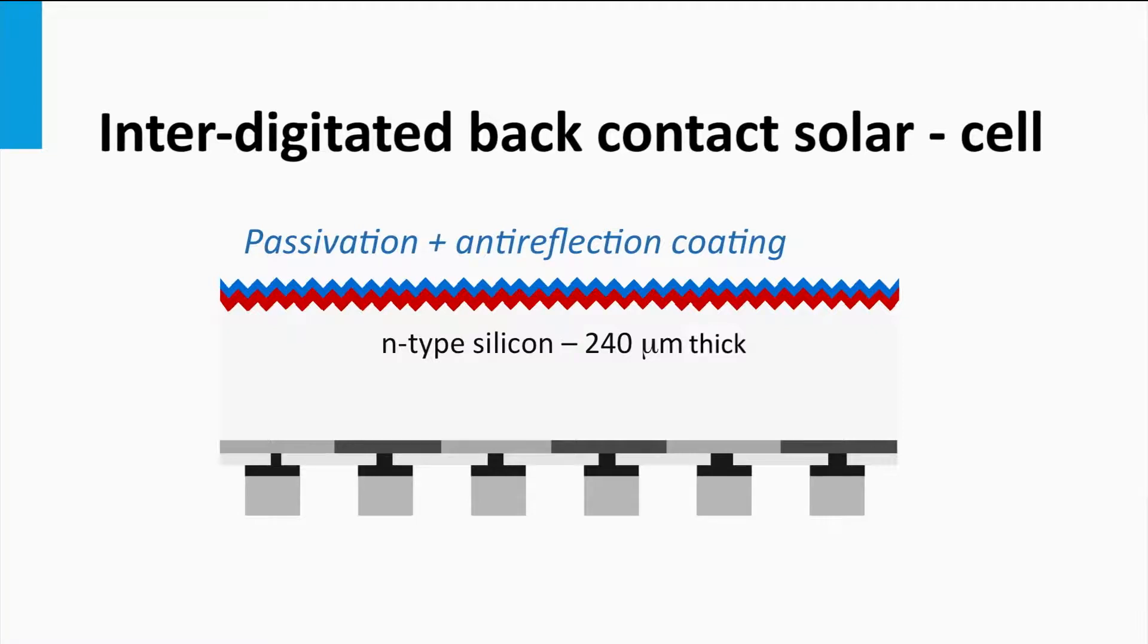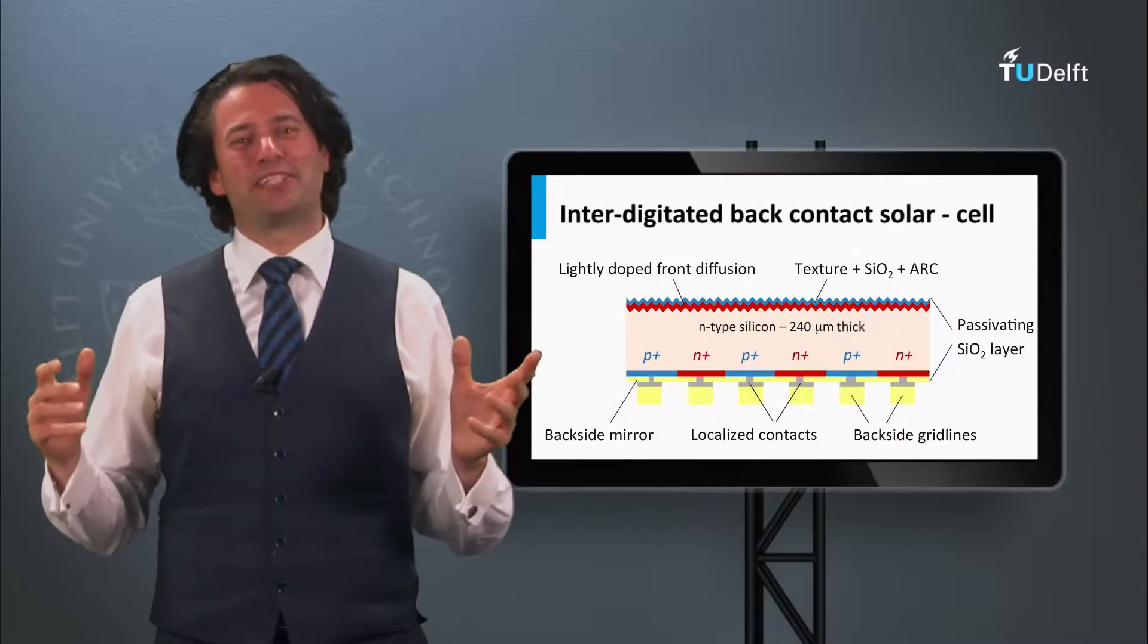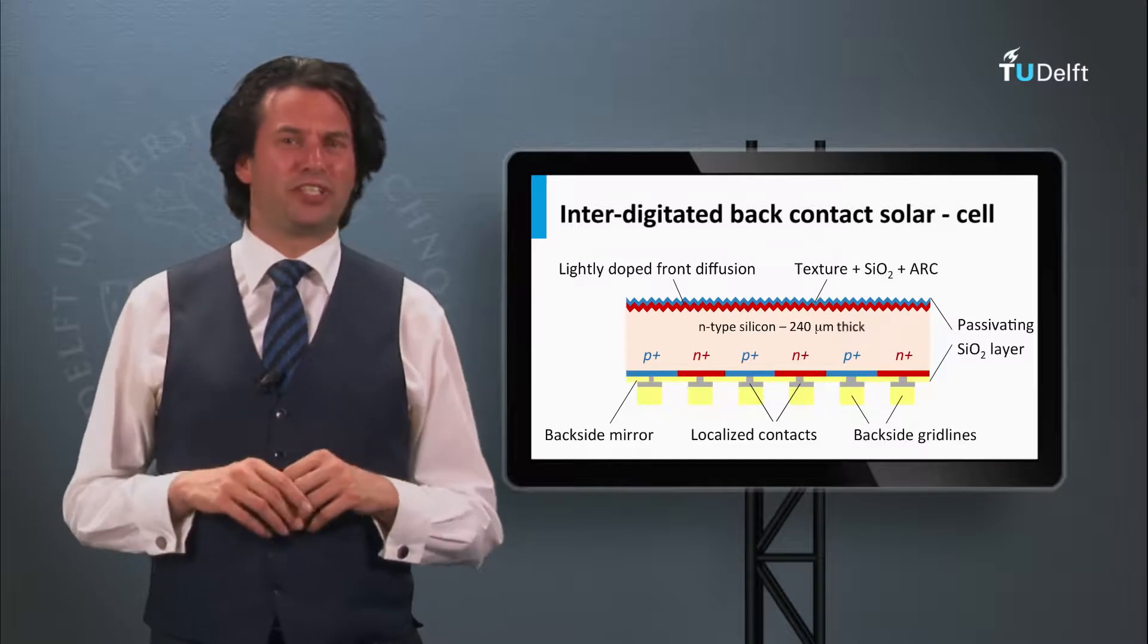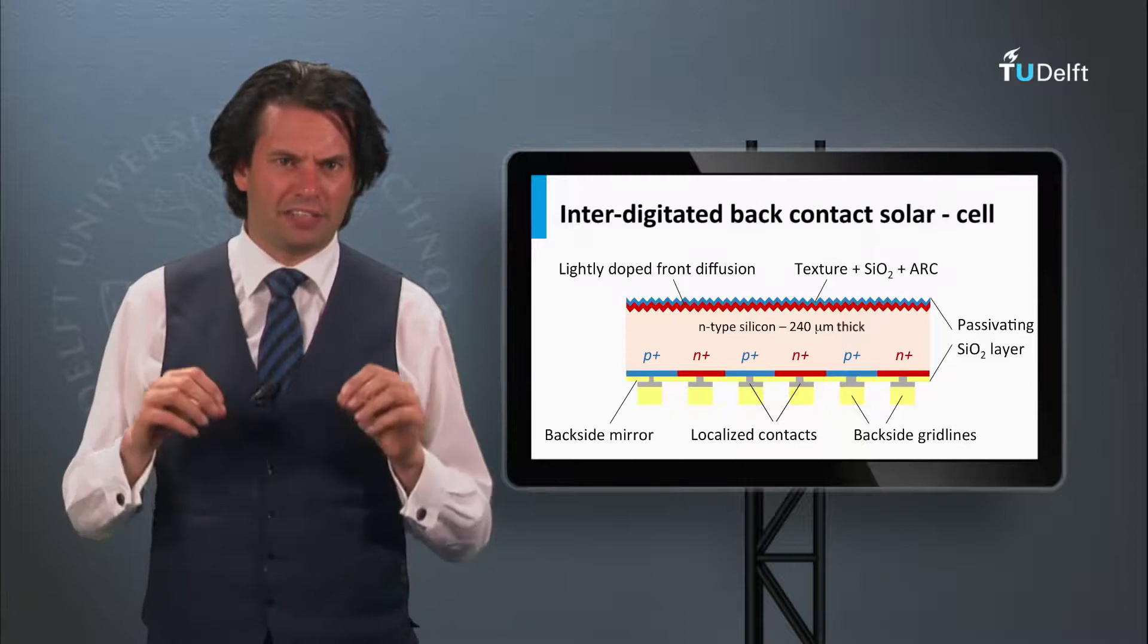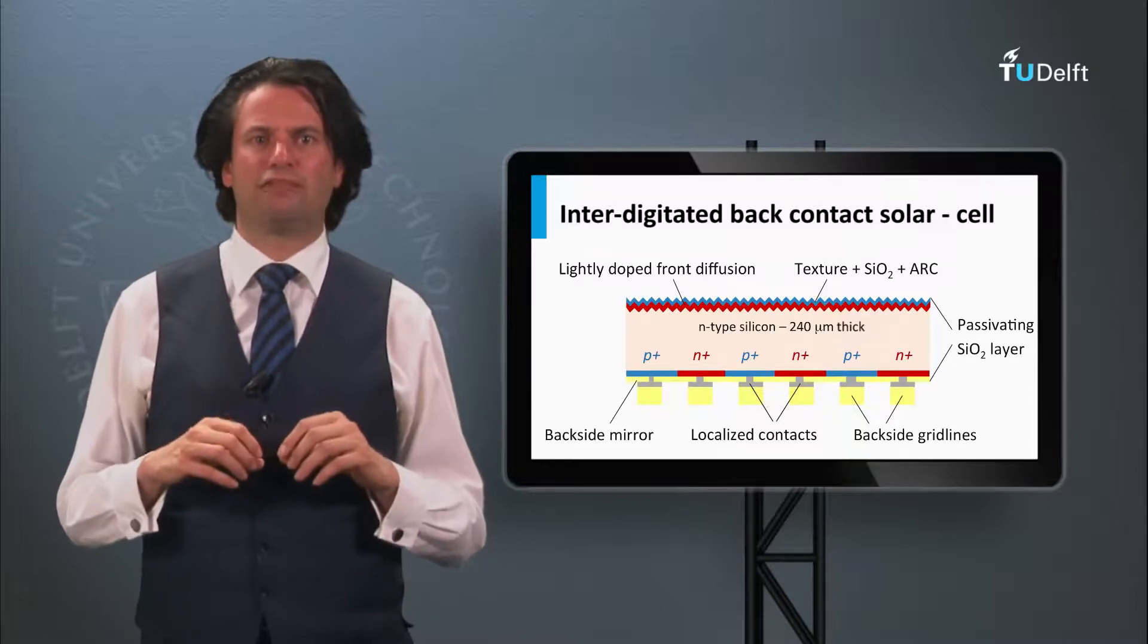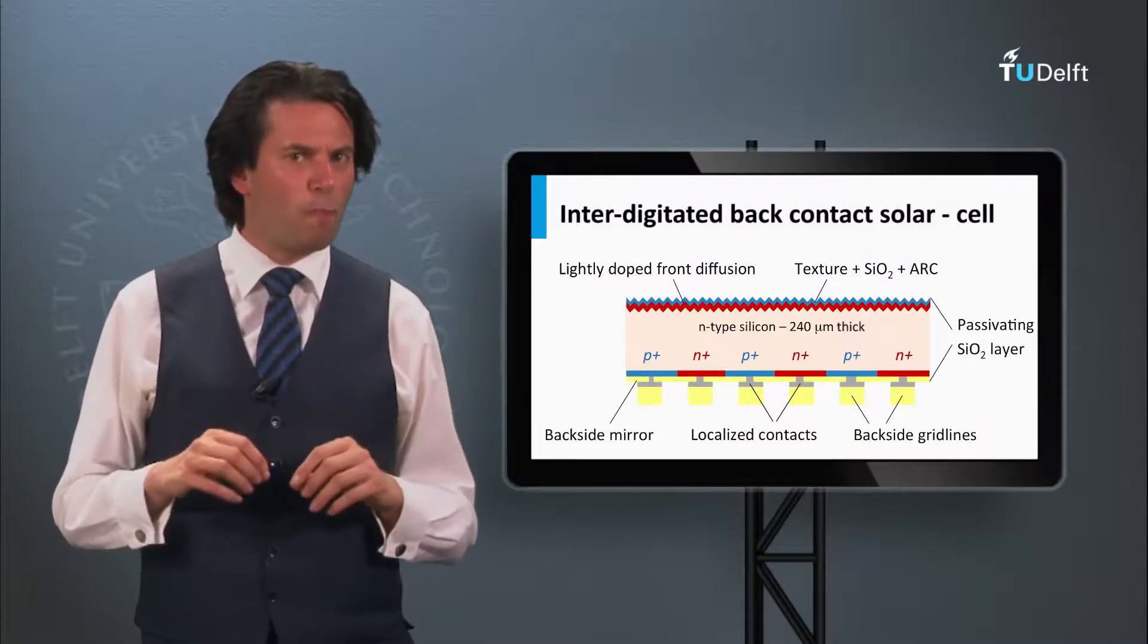At the front side, the reflective losses can be reduced using the same tricks as discussed for the PEARL solar cell. Deposition of double layered anti-reflection coatings and texturing of the front surfaces. SunPower is the company that has developed the cell technology based on interdigitated back contacts. And they have achieved high solar cell efficiencies of 24.2%.